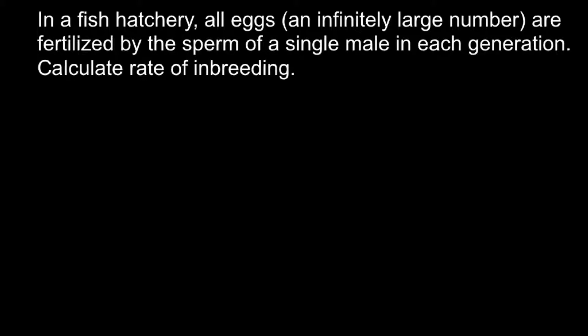We can solve this problem using a special formula where Ne stands for the effective number of the population. This means how many breeding members we have in the population. Sometimes, when we have a skewed number of males and females, this number can be different from the census number — the total number of animals, or fish.